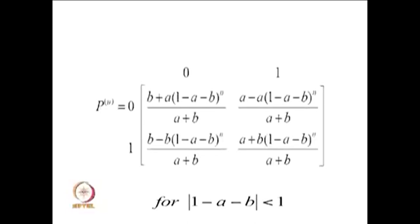Our interest is to find the distribution of x_n for general n, for which we need the n-step transition probability matrix. Since the one-step transition probability matrix is given, we can find p-squared, p-cubed, and so on. By induction we can find p^m, and from p^m we can find p^(m+n). The n-step transition probability of moving from 0 to 1 is: b + a(1-a-b)^n divided by (a+b), and from 0 to 0 is: a minus a(1-a-b)^n divided by (a+b).